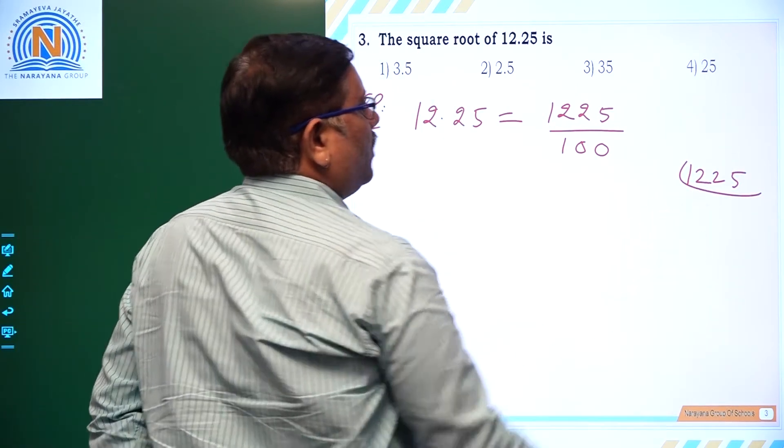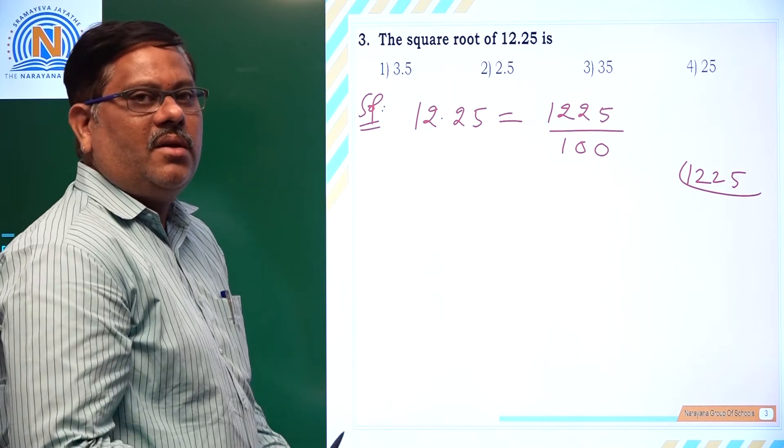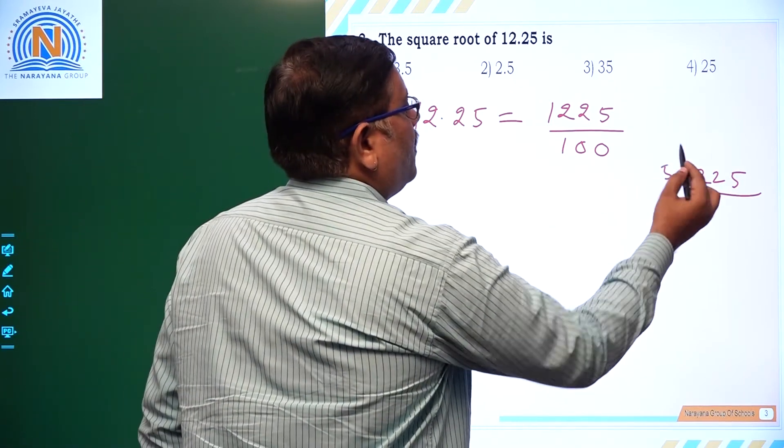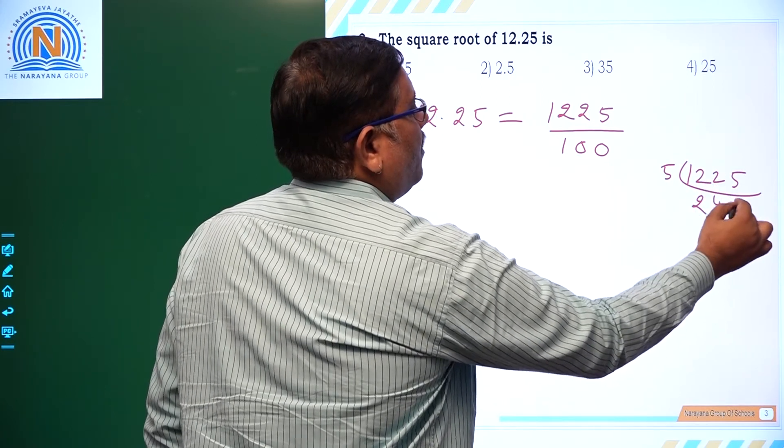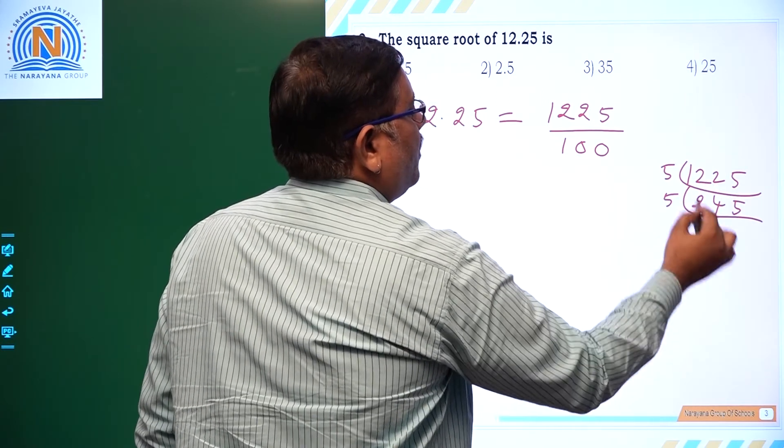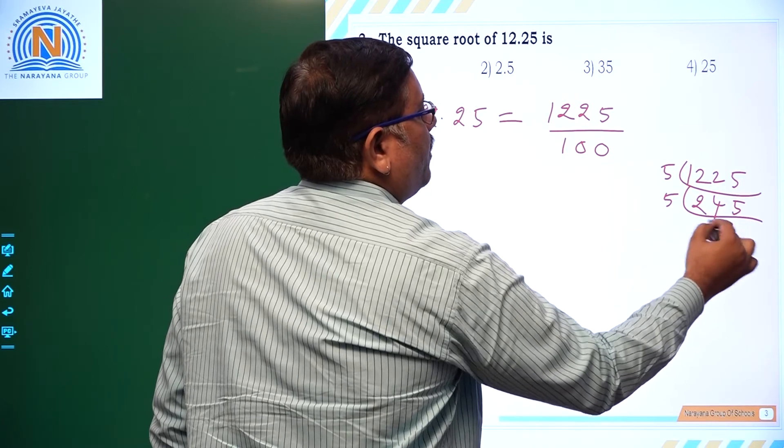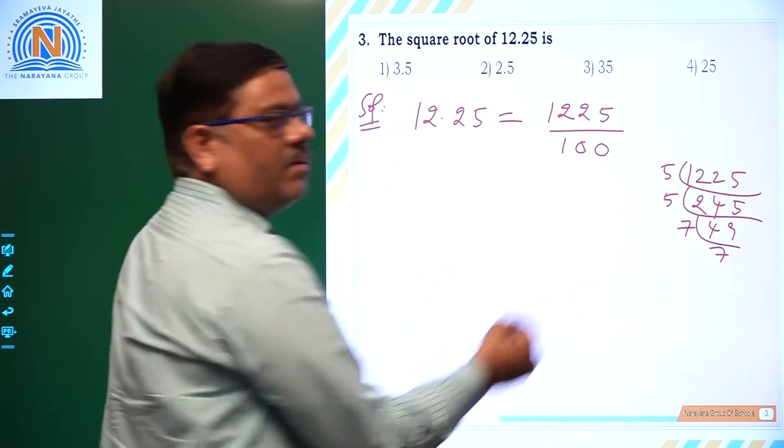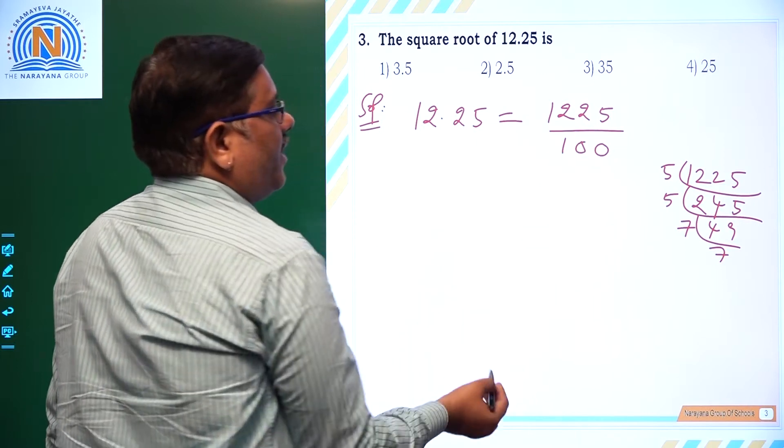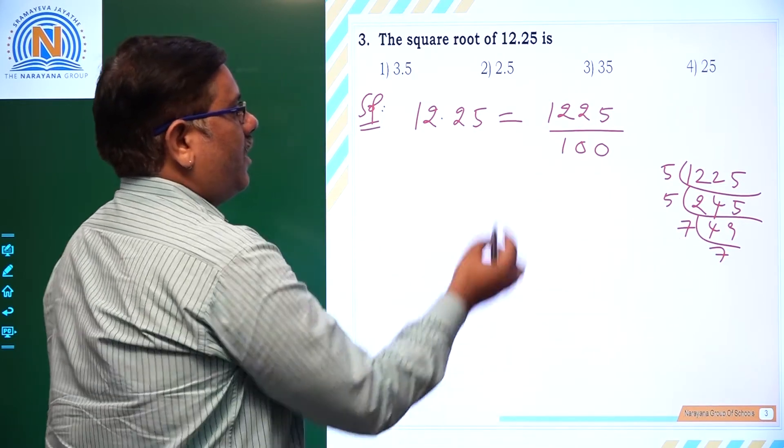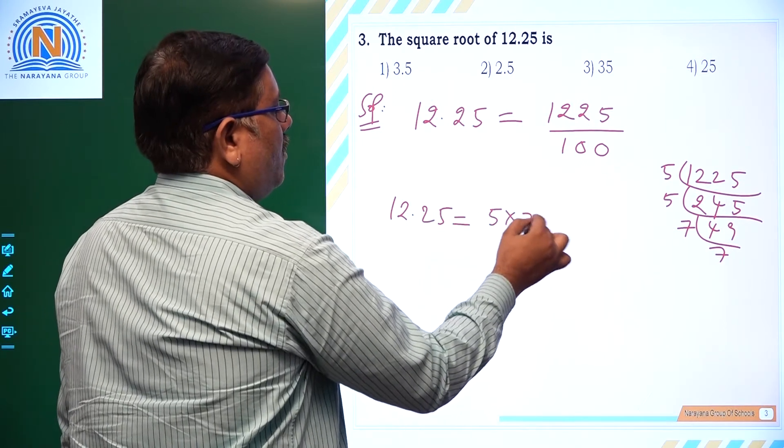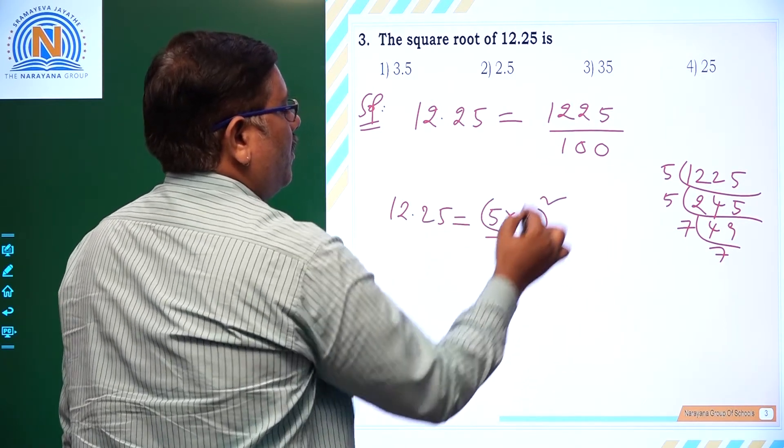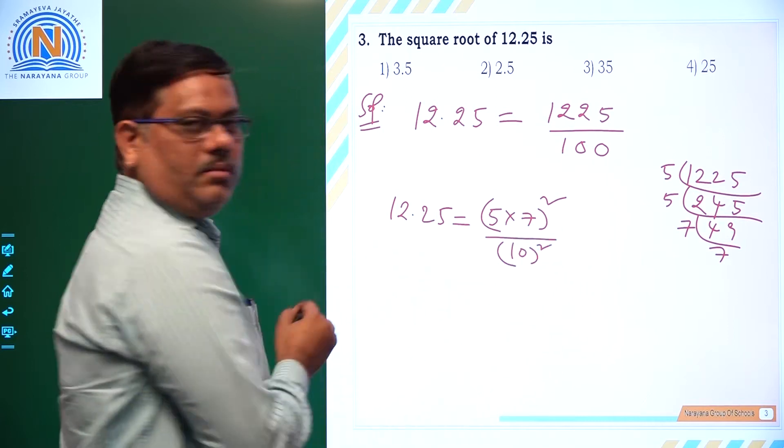Now 1225, let us try to write it as prime factors. 1225. 245, divide with 5. 49. Again with 5, 49 means 7 times 7. So 1225 you can write as 5 square into 7 square. So 12.25 you can write as 5 into 7 whole square by, here 100 is 10 square.